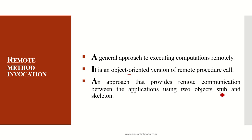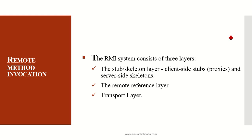RMI provides remote communication between applications using two objects: stubs and skeletons. These play an important role in RMI. RMI consists of three layers: the stubs and skeleton layer, where the client side has stubs acting as proxies and the server side has skeletons. The next layer is the remote reference layer, and the last is the transport layer.